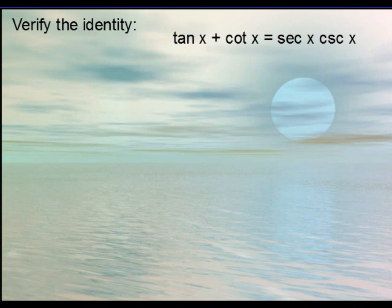Tan x plus cotan x show that it equals secant x times cosecant x. I'm going to put this dividing line here just to separate the left hand side from the right hand side. Remember this is not to be treated as an equation so we're not going to be subtracting cotan x from both sides or dividing secant by both sides. The rules for equations do not work here.